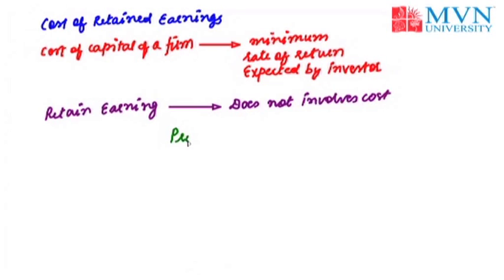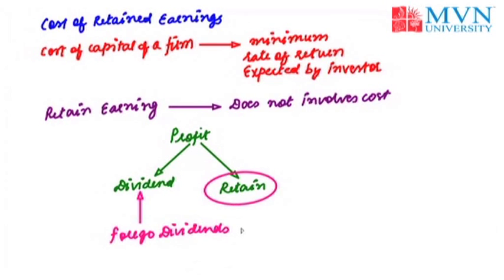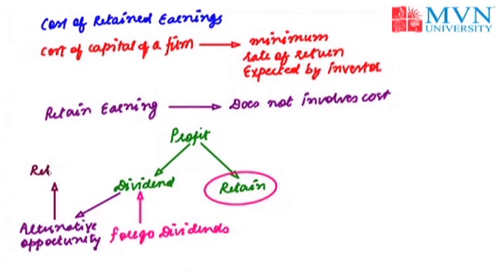Because whenever a firm is having profits, the key decision that the firm needs to make is whether it should distribute the available profits in terms of dividends. So whenever a firm retains a particular amount in the form of retained earnings out of the profits, the investor needs to forego the dividends. If an investor would have received this dividend amount, he could have invested it in alternative opportunities and earned a return. So by letting the firm retain that amount, the investor is foregoing the return he could have obtained in an alternative opportunity.